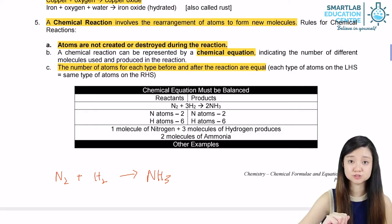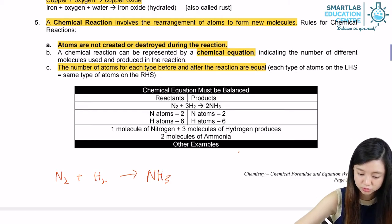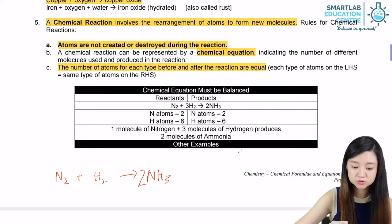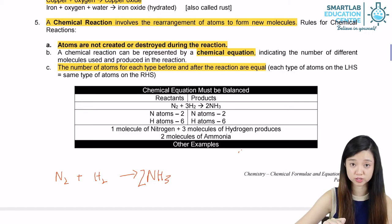So what we have to do is we have to balance the equation by putting a number 2 in front of ammonia, so that there will be two nitrogen on the right side of the equation now.